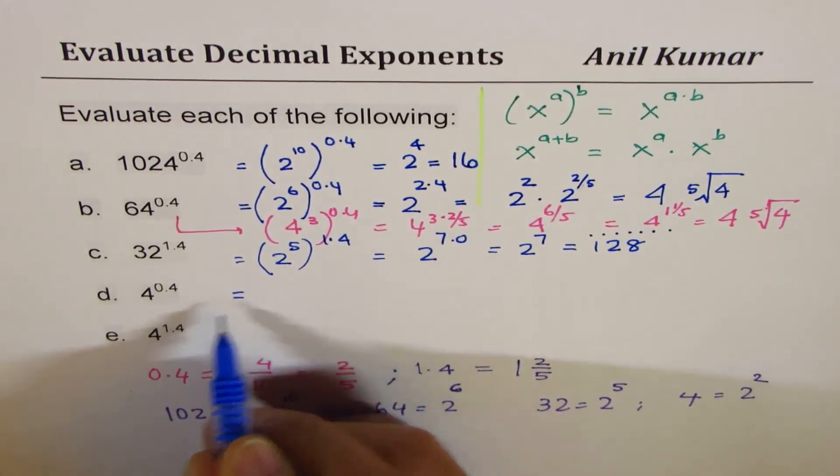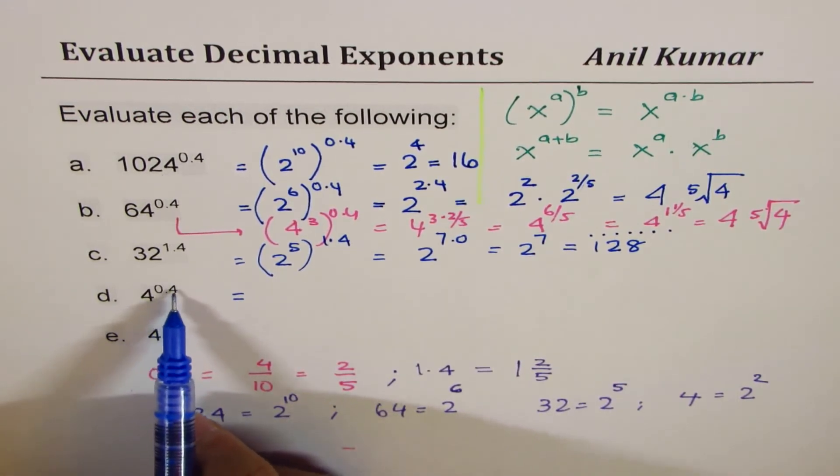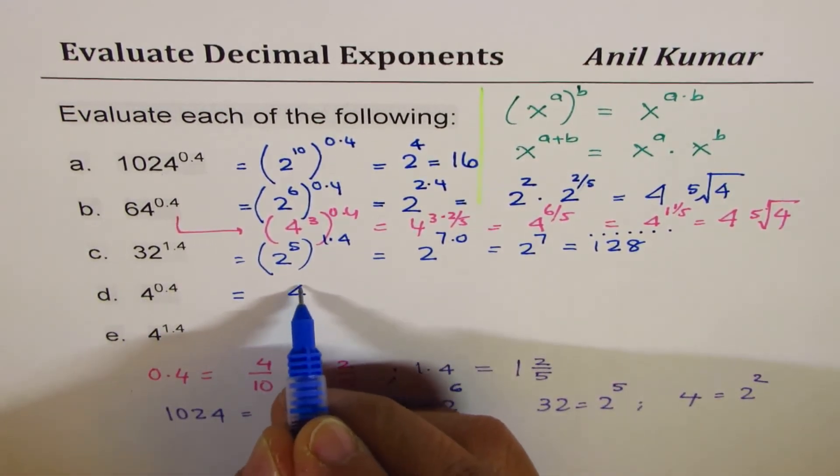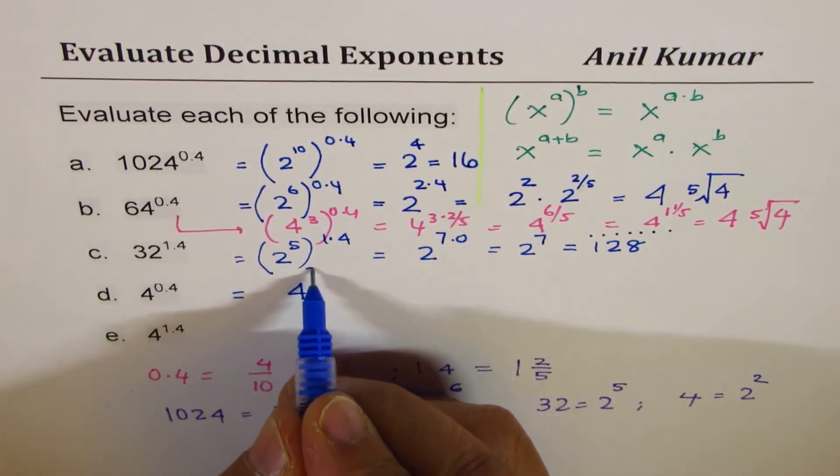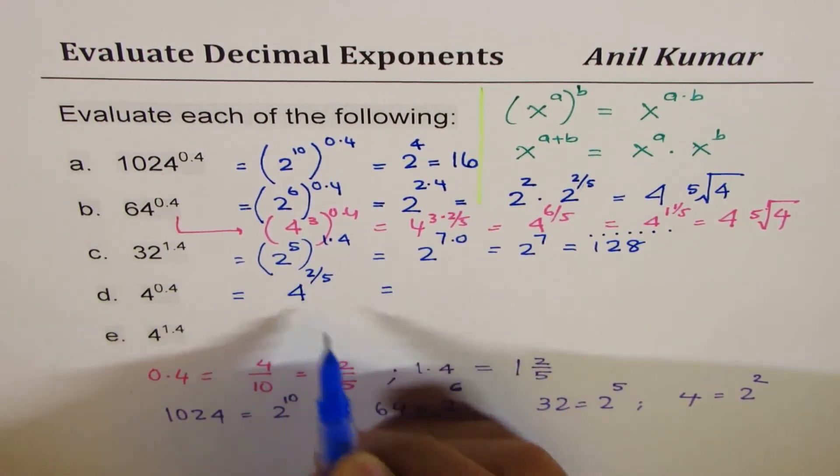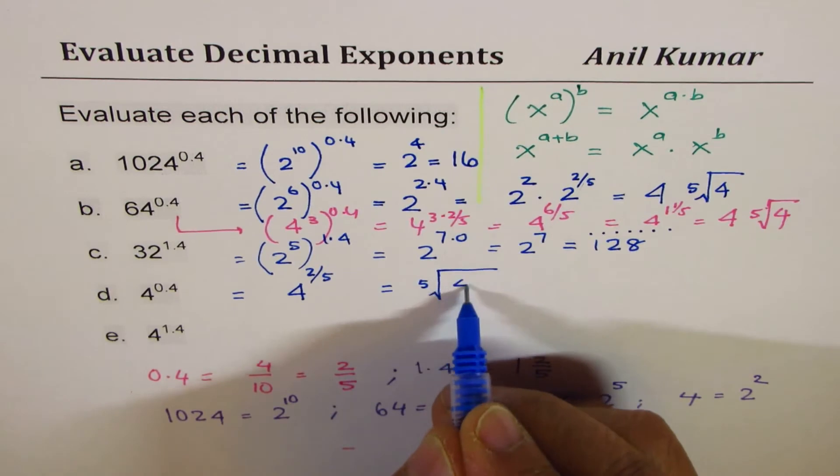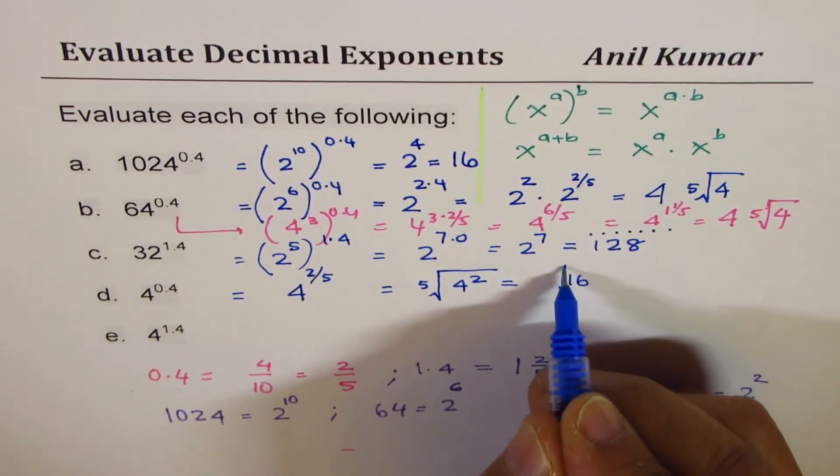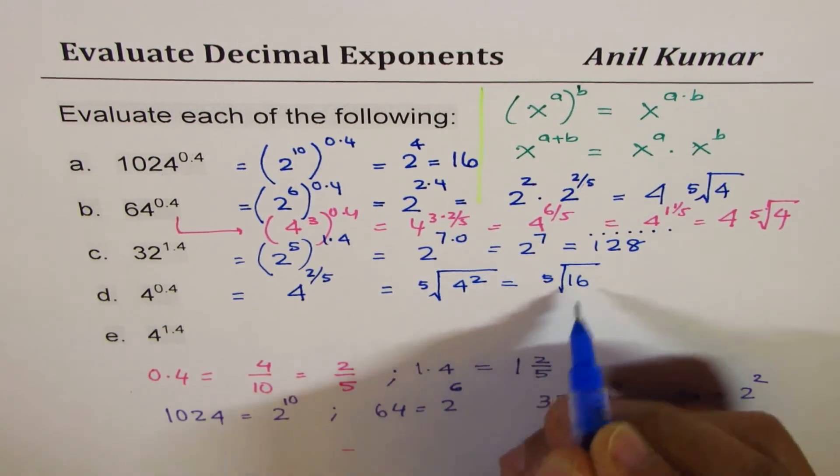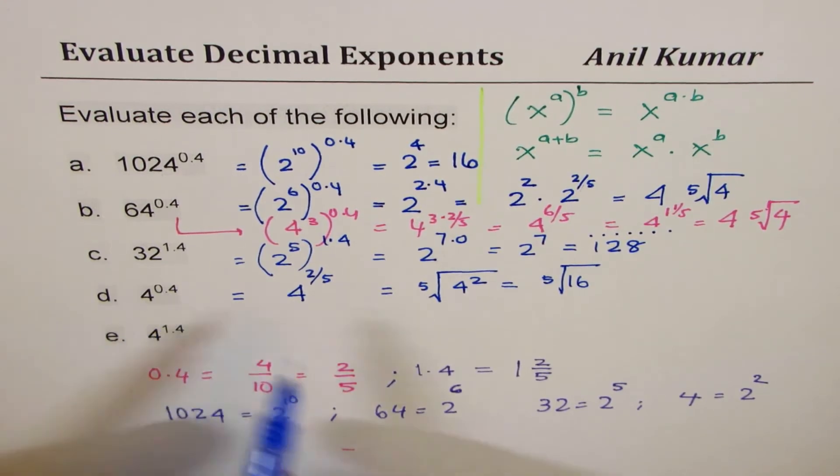Now let's get back to the real question here. 4 to the power of 0.4, which we could write as 4 to the power of 2 over 5. 2 over 5. So that really means you have to find fifth root of 4 squared. 4 squared is 16. So you get 16 here and you want the fifth root of 16. So that is what 4 to the power of 0.4 will look like.